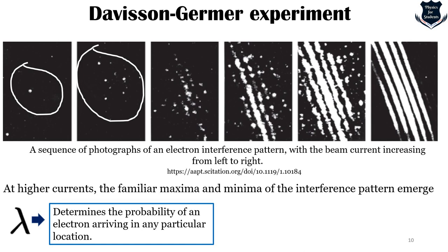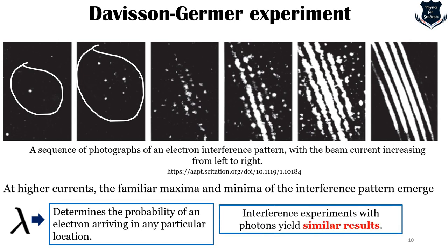At higher currents, the familiar maxima and minima of the interference pattern emerge, allowing us to determine the wavelength lambda from the size of the pattern. Lambda, together with the experimental geometry, determines the probability of an electron arriving at any particular location. Randomness and probabilities seem to be inherent in the de Broglie relation. Interference experiments with photons performed later yield similar results: random blips at low intensity with the wavelength-dependent pattern emerging at higher intensity.